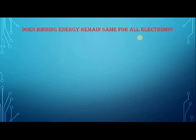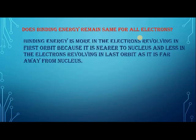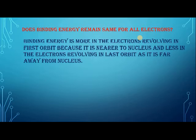Binding energy is more for electrons revolving in the first orbit because it is close to the nucleus, and less for electrons revolving in the last orbit as it is far away from the nucleus. According to Coulomb's law, force is inversely proportional to the square of distance — so as the distance increases, force decreases.